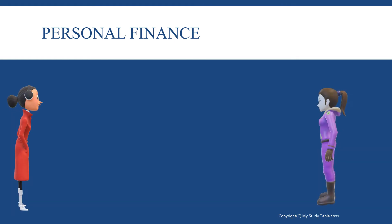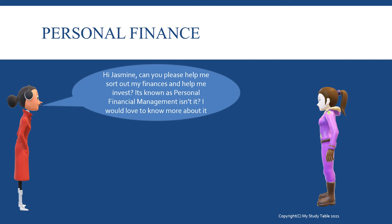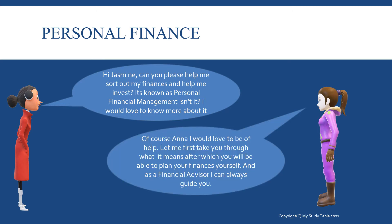Anna waits for Jasmine and once she's back, Anna asks for her help to sort out her finances and help her invest. She knows the concept is called personal financial management and would want to know more about it. Jasmine is willing to help and guide Anna, so she begins by taking her through what personal finance actually means — and this will help Anna take the right financial decisions and make her own financial plan. So while Jasmine takes Anna through the entire concept, so will I.